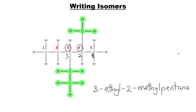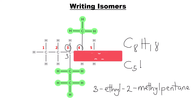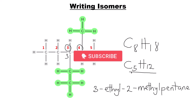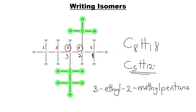These are all the possible isomers for C₈H₁₈. You can now try writing the possible isomers for C₅H₁₂ to see how well you've mastered the skills learned in this video. Thank you for watching, and see you in the next lesson.